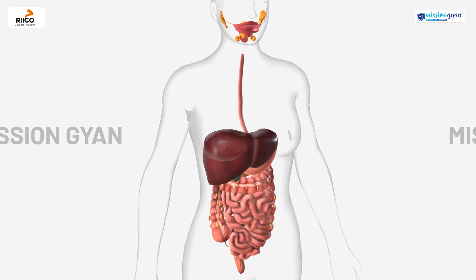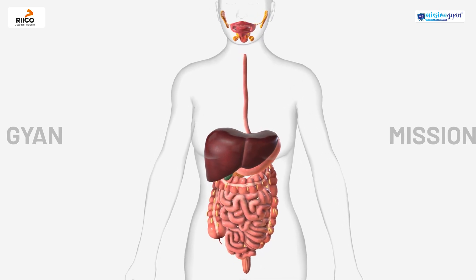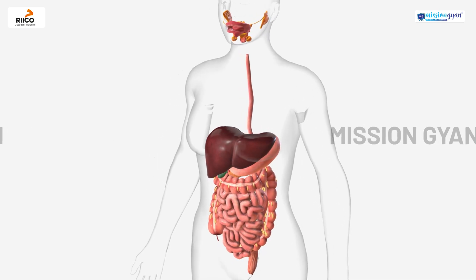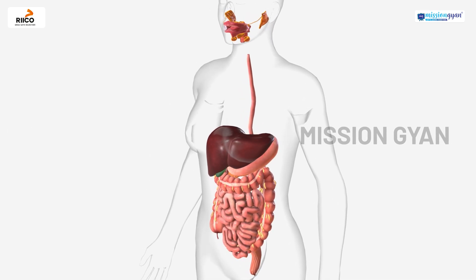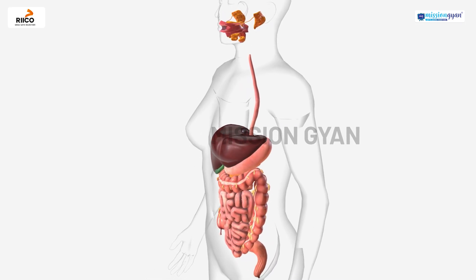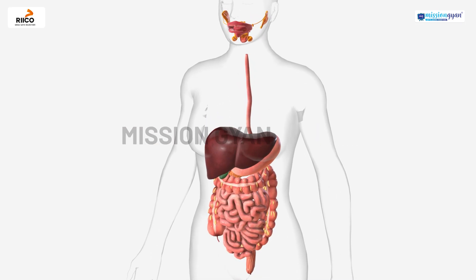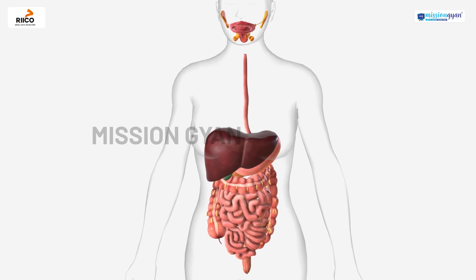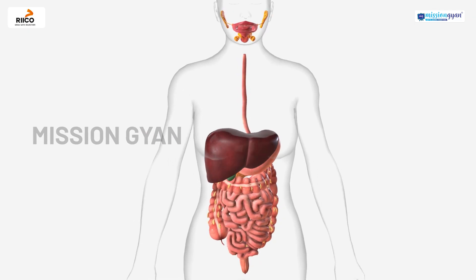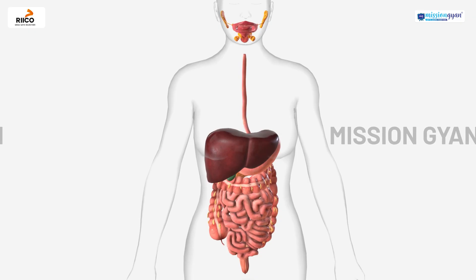Welcome. Today we are going on an exciting journey to learn about the human digestive system and how our body processes food. The digestive system is made up of the alimentary canal and associated glands. Let's start with the parts of the alimentary canal.